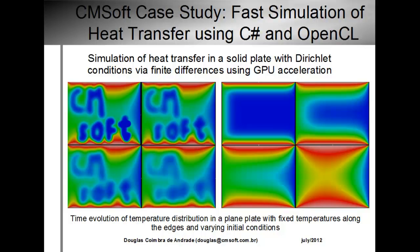What we have here is a plate, a plain plate in which the temperature in the upper part and in the bottom of the plate are fixed at a high value, and the values to the left and right are fixed at different lower values of temperature.